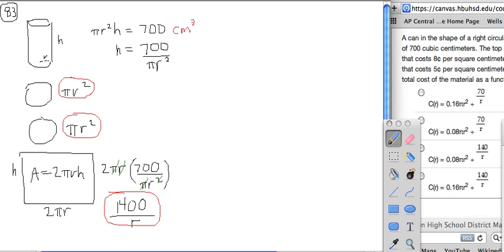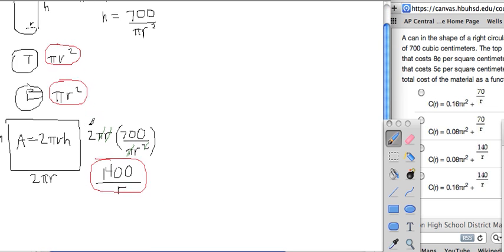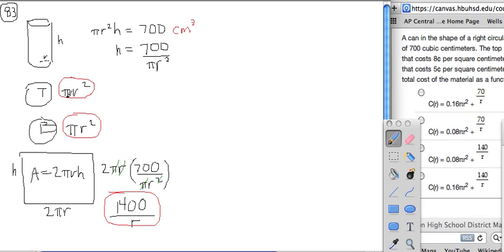Label T for top, B for bottom. Those are the same shape, those are circles. And then the side of this cylinder is in the shape of a rectangle if we were to cut it and lay it out. The area of the top is the same as the area of the bottom, area of the circles πr².